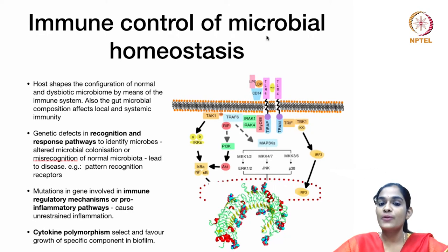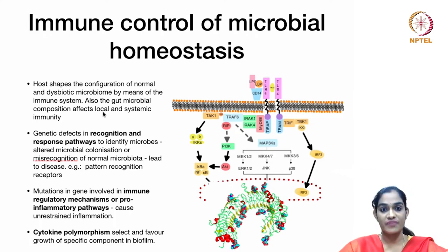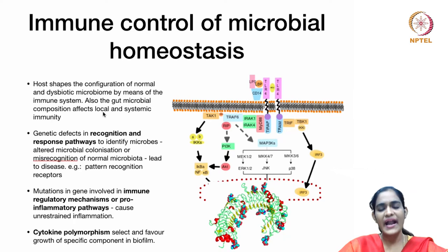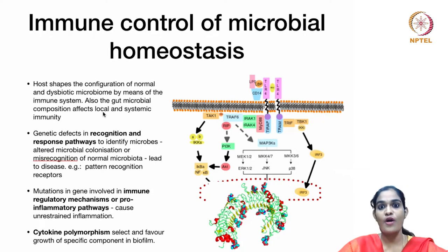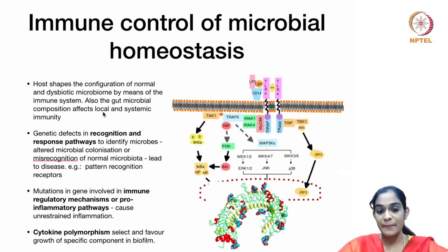The immune control of microbial homeostasis: the host shapes the configuration of normal and dysbiotic microbiome through the immune system, and in turn the gut microbial composition affects local and systemic immunity. Genetic defects in recognition and response pathways can alter microbial colonization or misrecognize normal microbiota leading to disease. Defects in pattern recognition receptors can lead to increased mucosal-associated bacteria causing colorectal cancer and prolonged inflammatory conditions. Cytokine polymorphisms select and favor the growth of specific components in the biofilm.